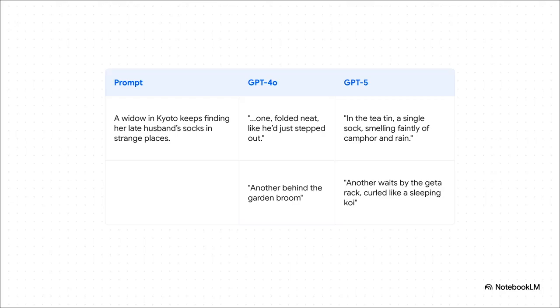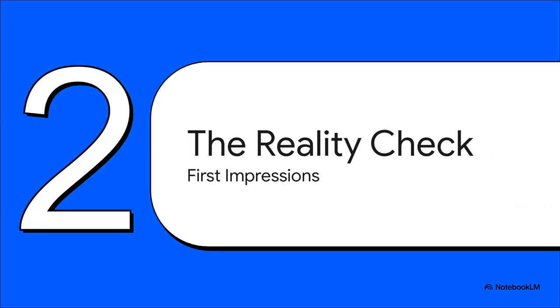GPT-5 comes up with this line about a sock curled like a sleeping koi. That's different. It hints at much deeper, more literary kind of intelligence. Okay, so that's the promise. That's the shiny brochure version.